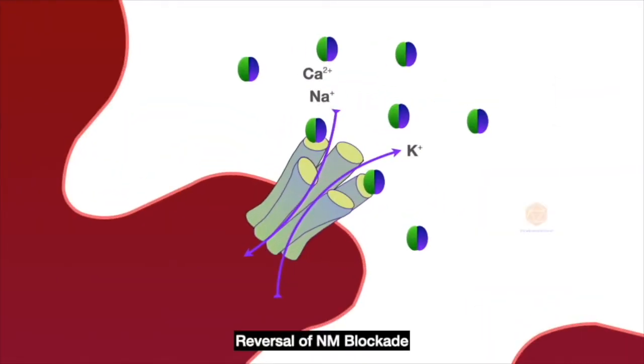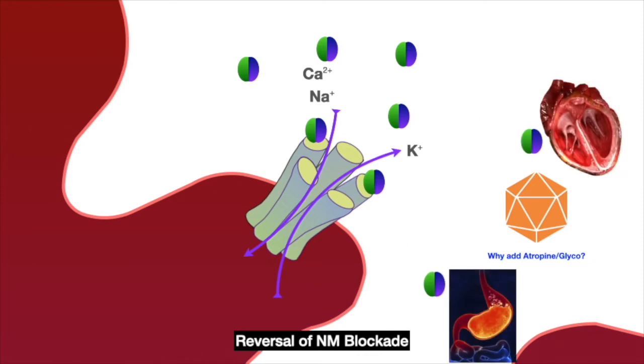We add an anticholinergic drug along with neostigmine for reversal, right? What is the reason? Acetylcholine is a parasympathomimetic agent which can act on the muscarinic receptors in the heart leading to bradycardia, in the stomach increasing gastric secretions, etc.